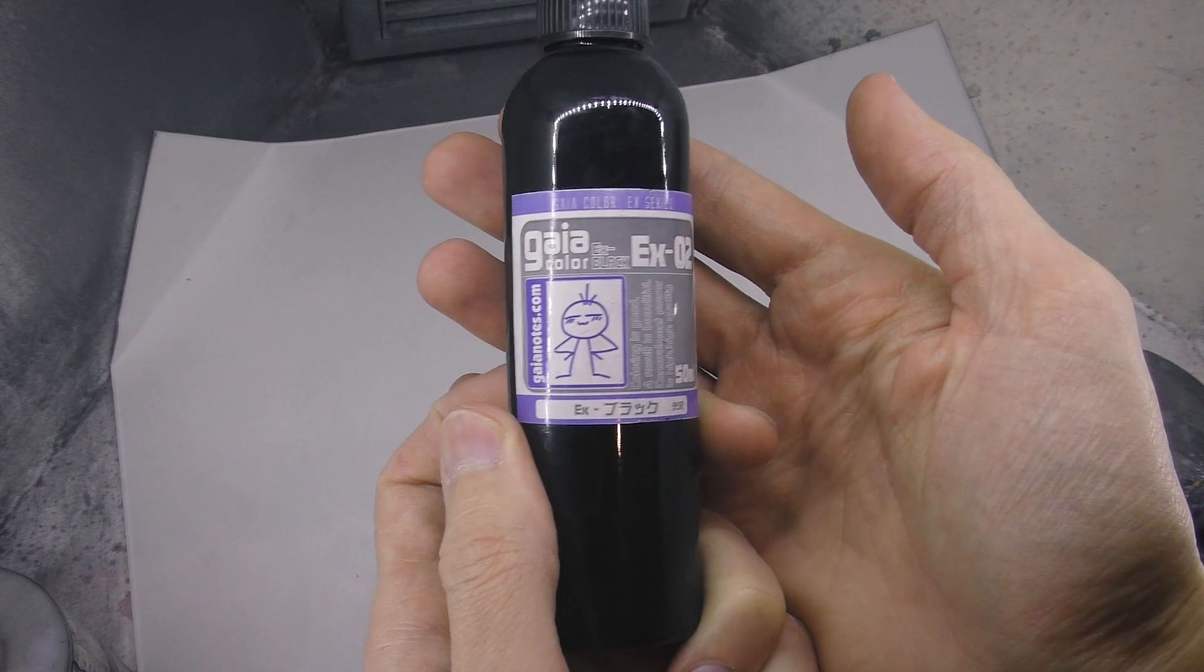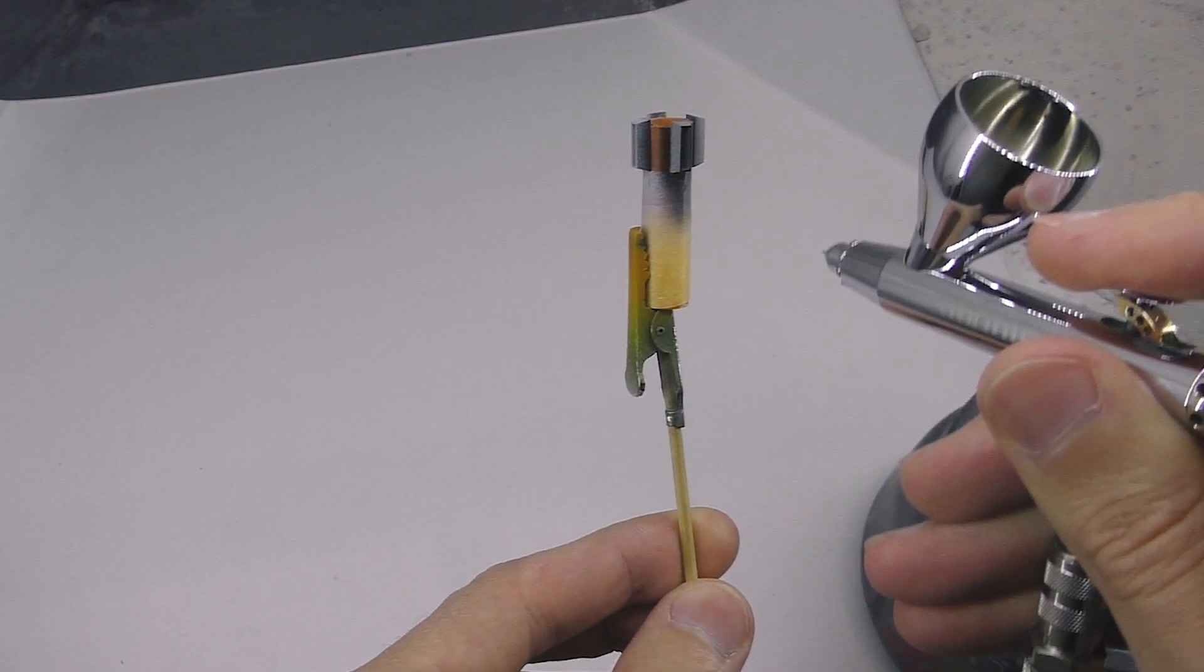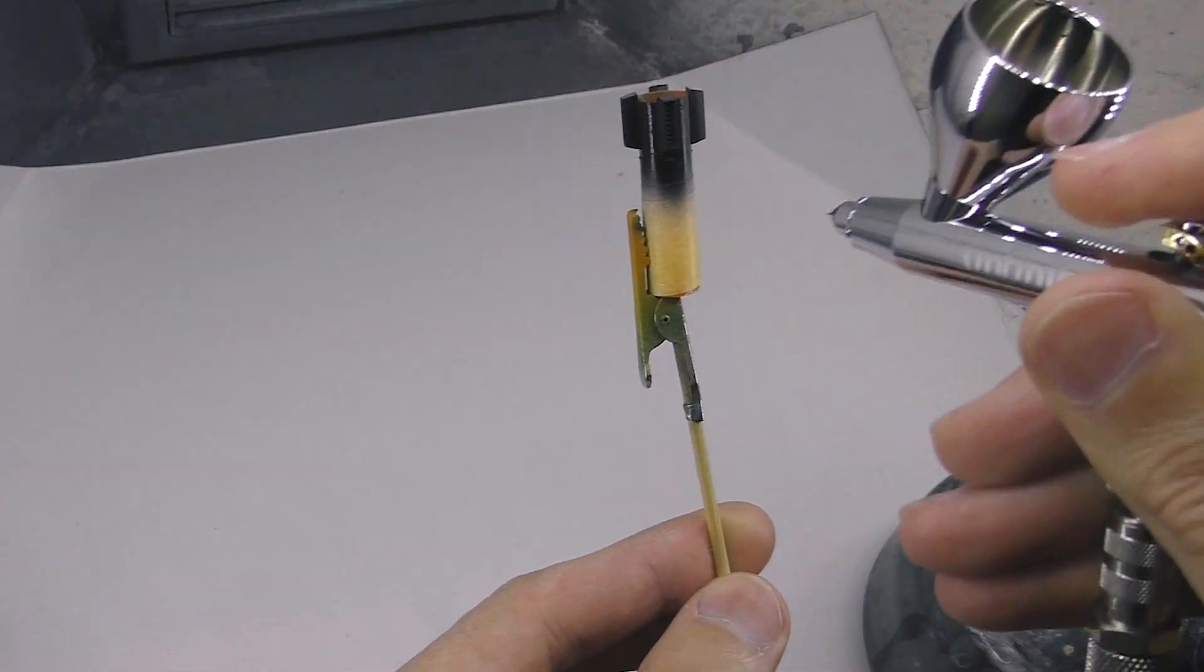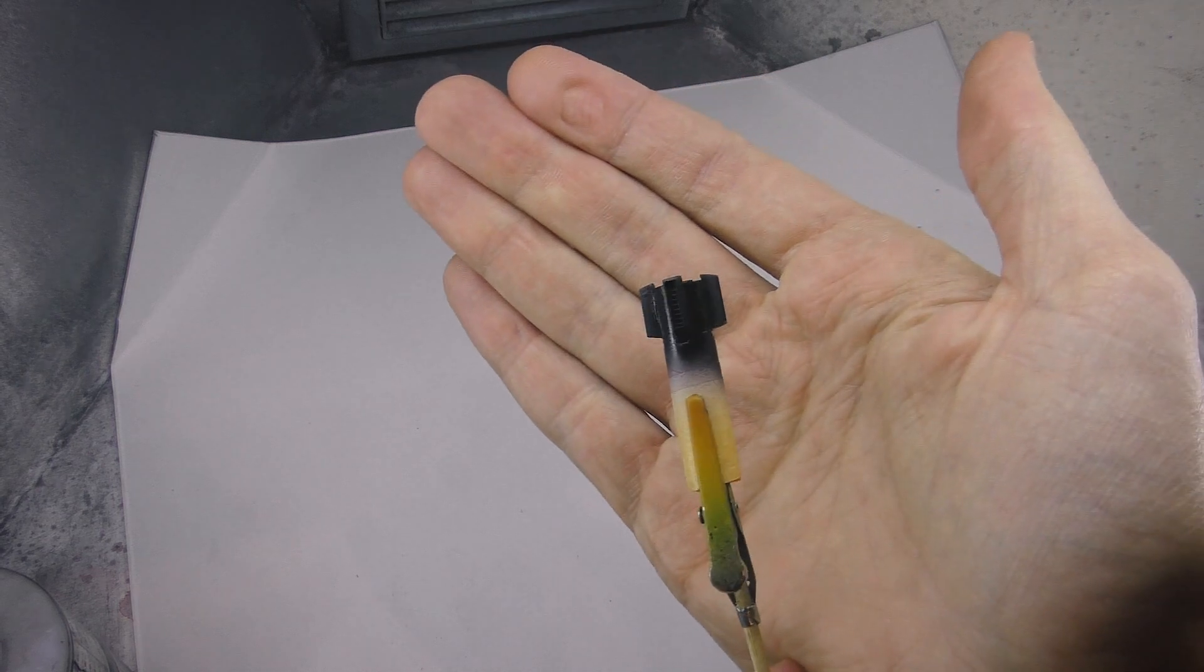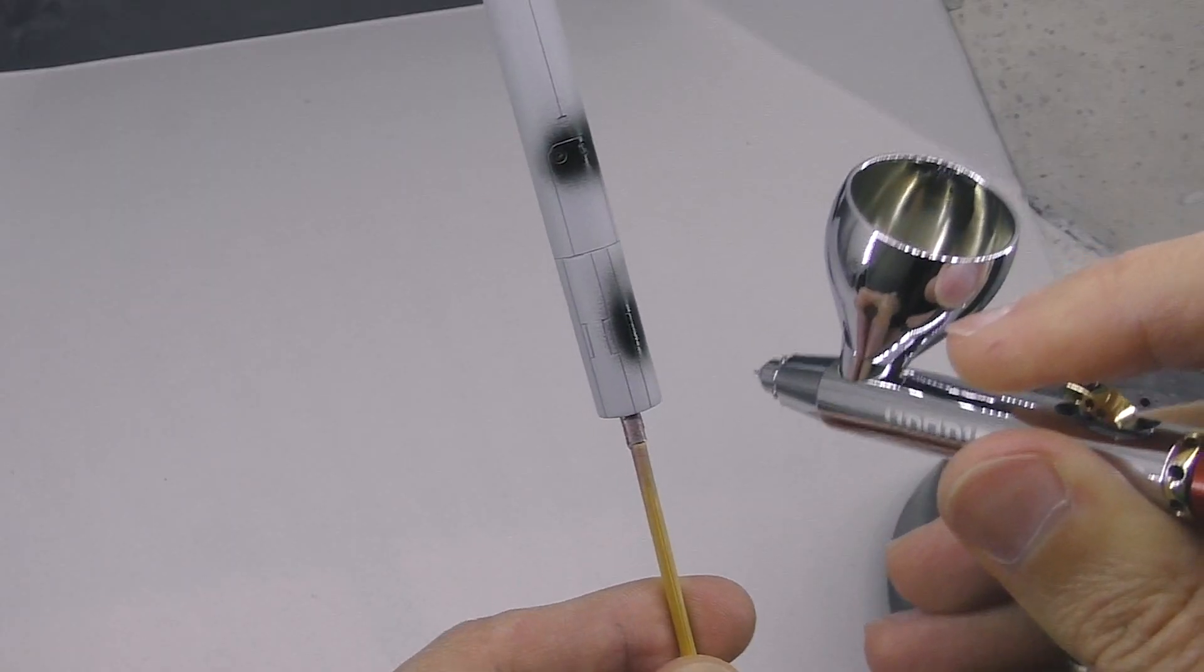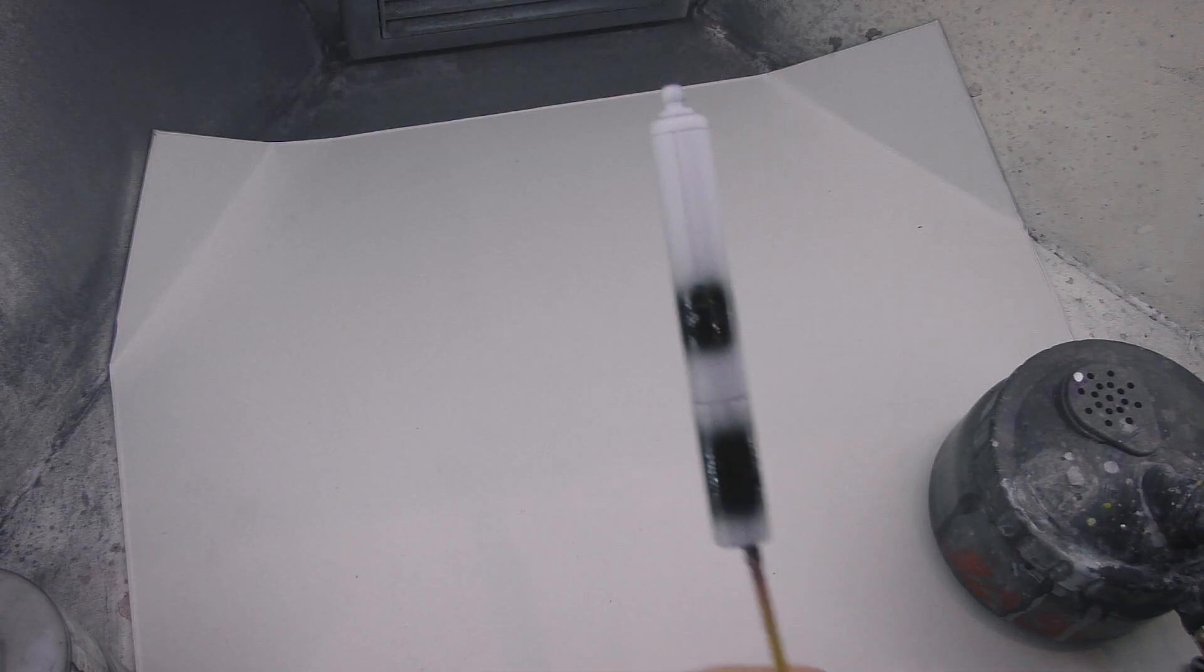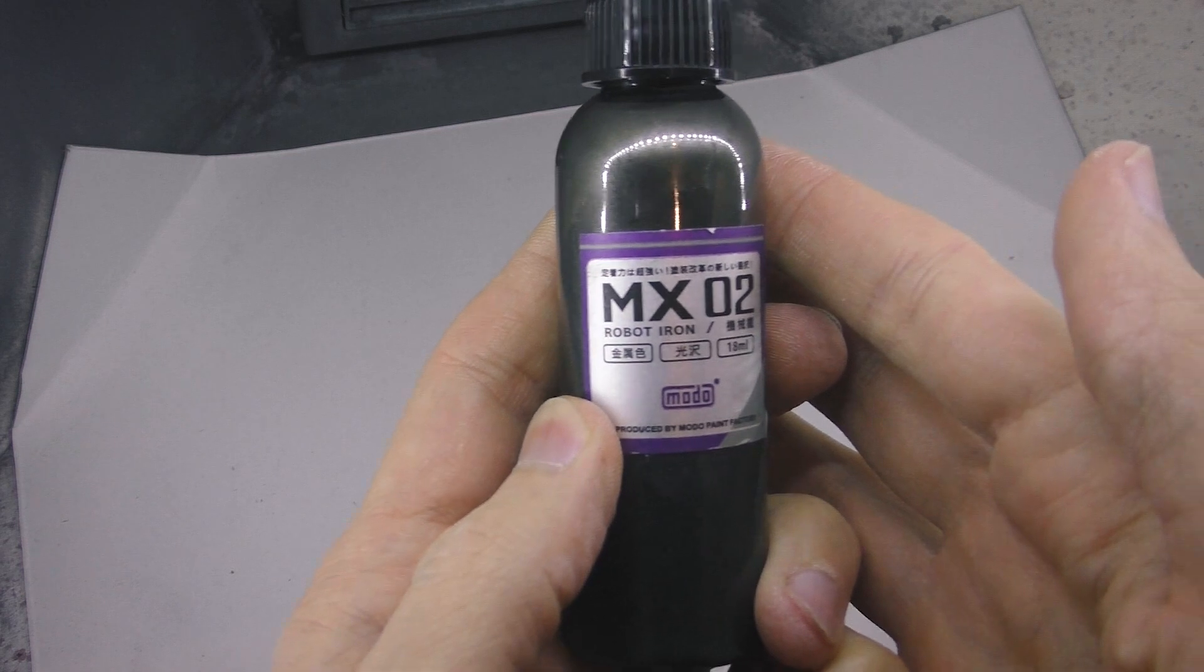It's time to get to the painting. I use black gloss paint as a base coat for the metallics. Now the metallic paint.